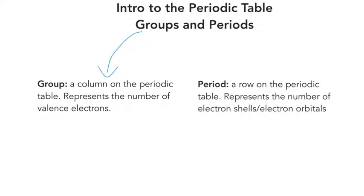So now we're going to talk about periods. Periods on the periodic table are the rows, and they represent the number of electron shells or electron orbitals. Now, a lot of the time you might see shell or orbitals written, they mean the same thing. So electron shell, electron orbital, it's the exact same thing.